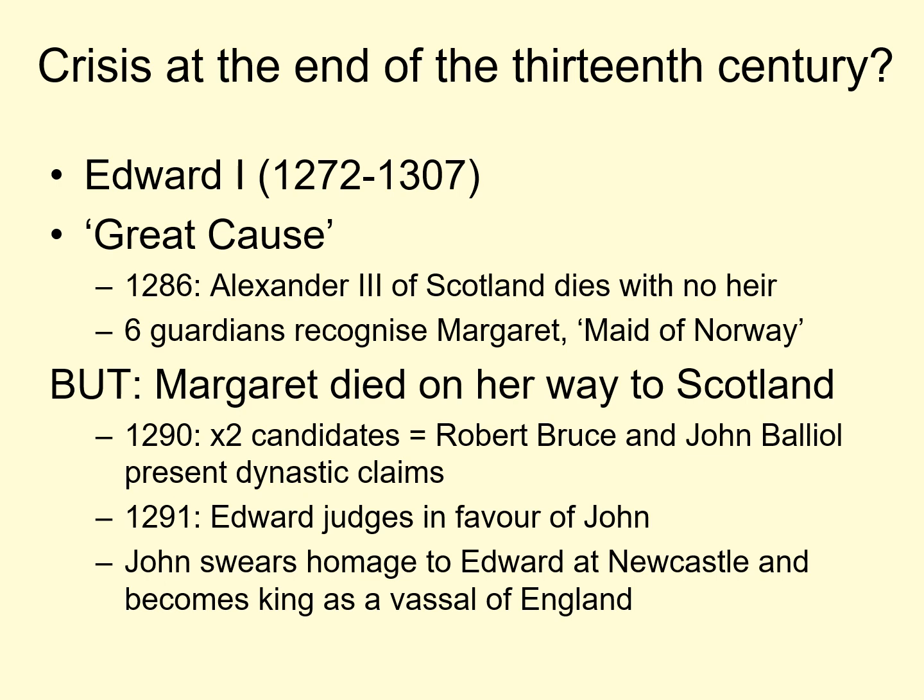In 1290, there are two dominant candidates. Robert Bruce — this is actually Robert Bruce the fifth lord of Annandale; keep in mind that number, fifth lord of Annandale, because his grandson, the seventh lord of Annandale, would eventually emerge as king of Scotland later. The two candidates in 1290 are Robert Bruce the fifth lord of Annandale, and a man named John Balliol who actually has some Norman blood in his veins and some estates in France. Both feel they have a strong claim to the Scottish throne.